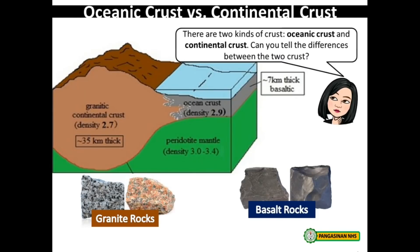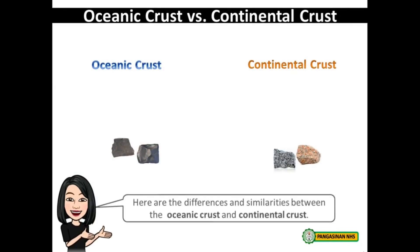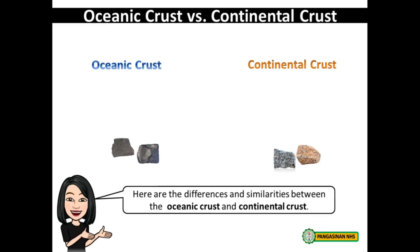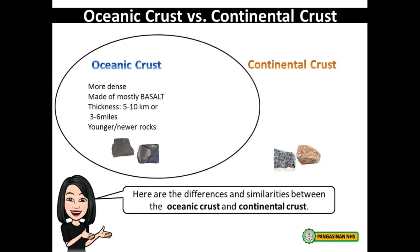There are two kinds of crust: oceanic crust and continental crust. Can you tell the differences between the two? Here are the differences and similarities. For the oceanic crust, it is more dense, made of mostly basalt, with a thickness of 5 to 10 kilometers, or 3 to 6 miles, and consists of mostly younger and newer rocks.